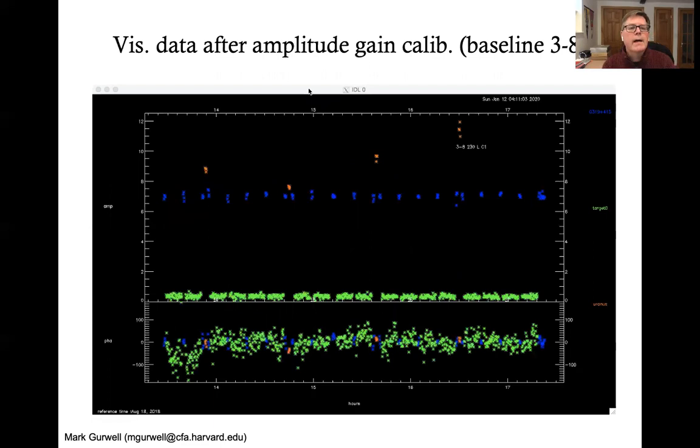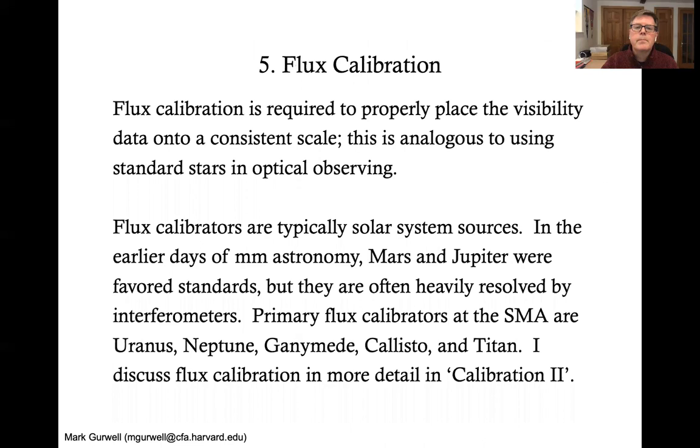Then after you apply that calibration, you can see that 3C84 has been corrected to be extremely flat as a function of time. Those calibrations are also applied to the other sources, including Uranus and the target source, and should be correcting almost all of the data now for amplitude and phase variations, as well as passband variations.